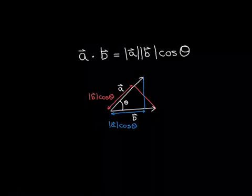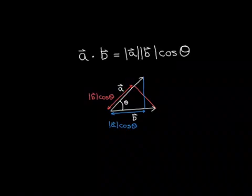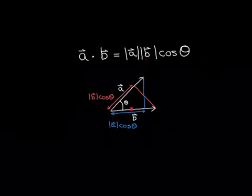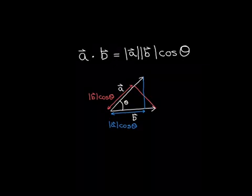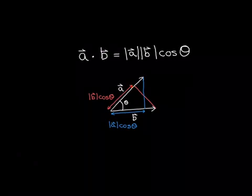You can imagine taking vector B and splitting it into two components: a component that is parallel to vector A, and a component that is perpendicular to vector A. If you take the length of vector B and multiply by cos θ, this is a right-angled triangle that these two components form with the actual vector as the hypotenuse. The modulus of B times cos θ gives the length of the component in the same direction as vector A.